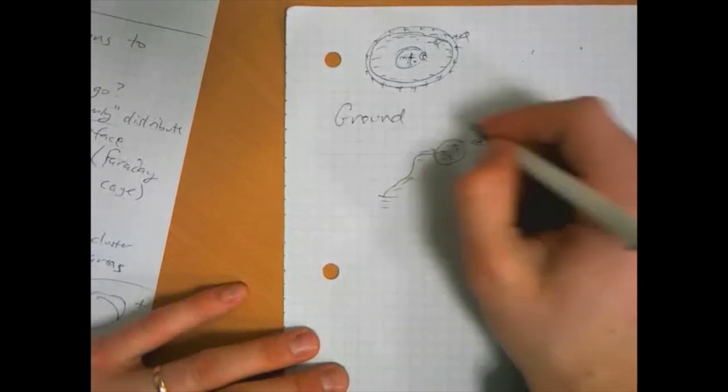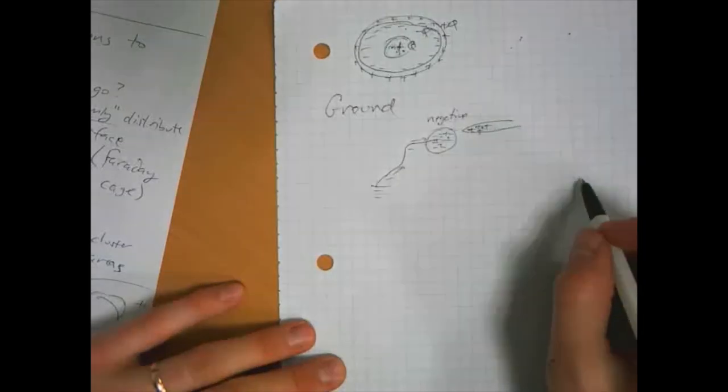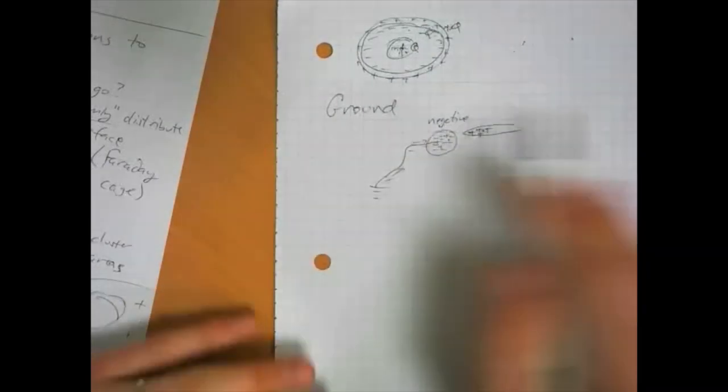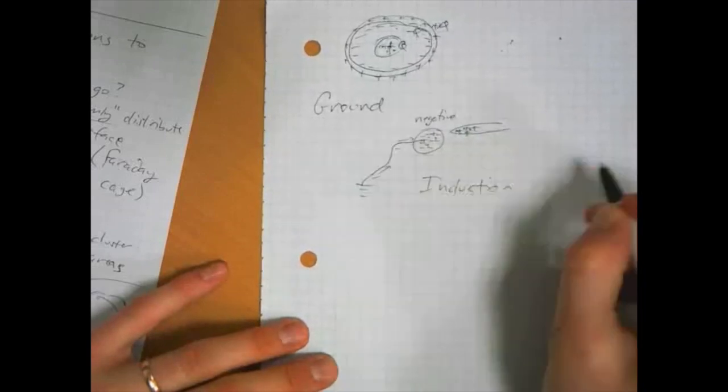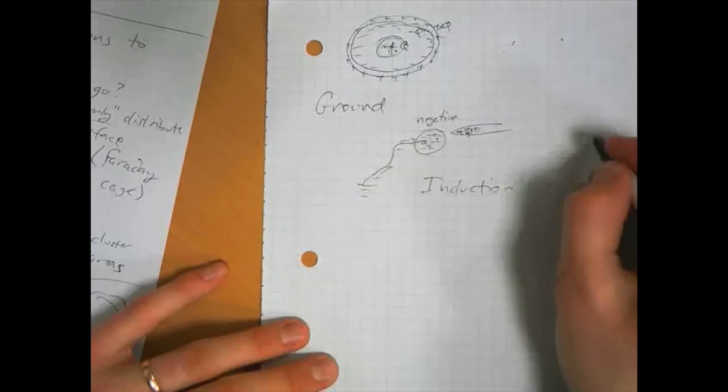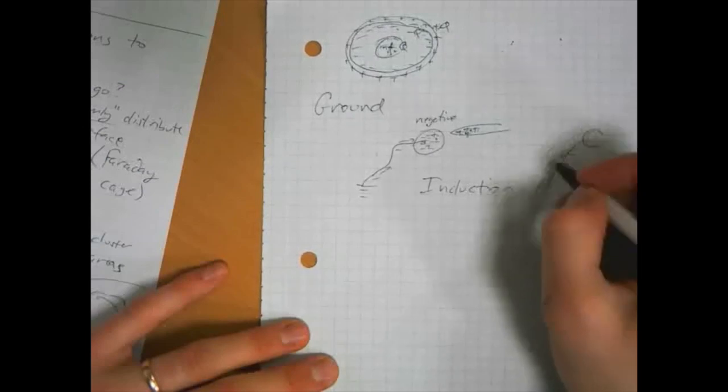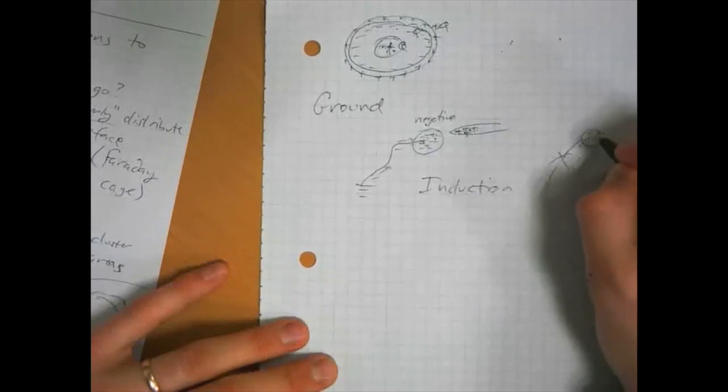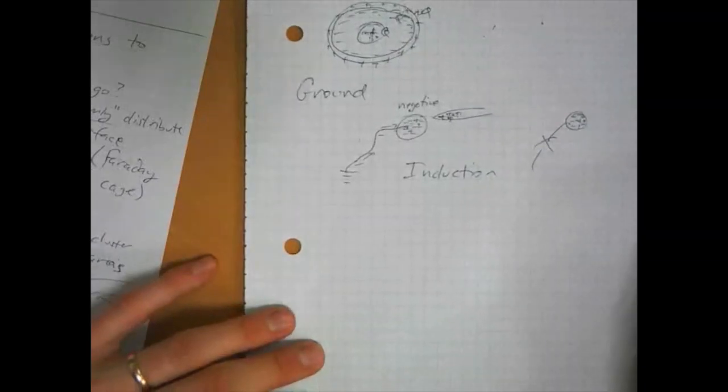So bringing this positively charged object close is another means of charging an object. We talked about rubbing objects together, taking electrons that way. This is a method of charging known as induction. You bring this positively charged object close, the electrons come in, and then you cut the ground. So electrons are no longer free to flow, then you just move the object away, and now the sphere has acquired a net negative charge, even though nothing ever touched it. So that's a method of charging objects known as induction.